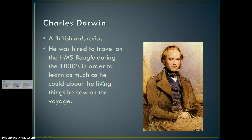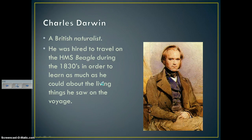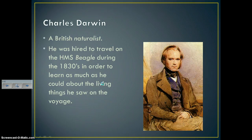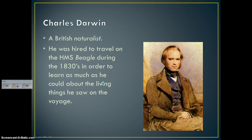Now we have our background definition of species. Let's talk about where the idea of evolution came from. The name most associated with evolution is Charles Darwin — he was the first person to really propose that species can change over time. He was a British naturalist in the early 1800s, hired to travel on the ship called the HMS Beagle during the 1830s to learn as much as he could about the living things he saw on the voyage.